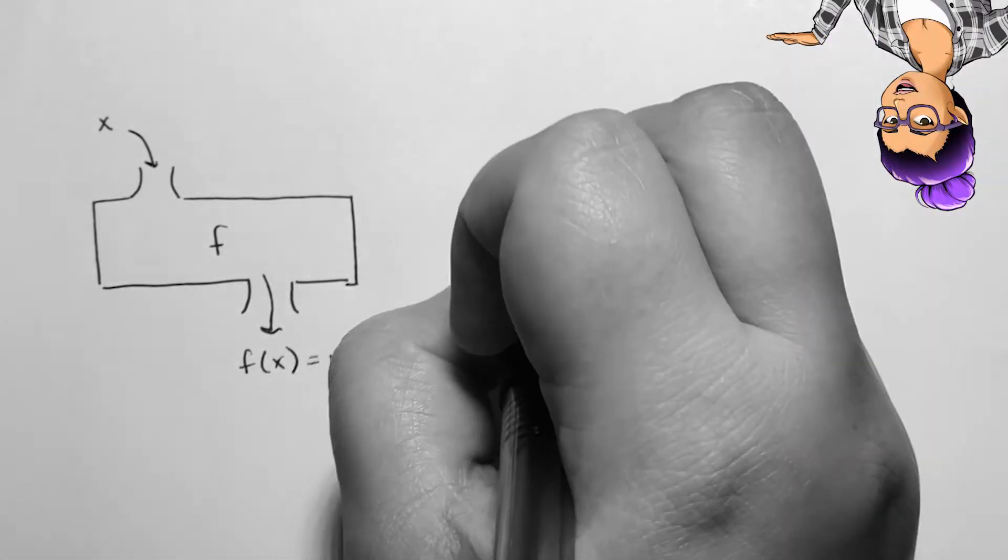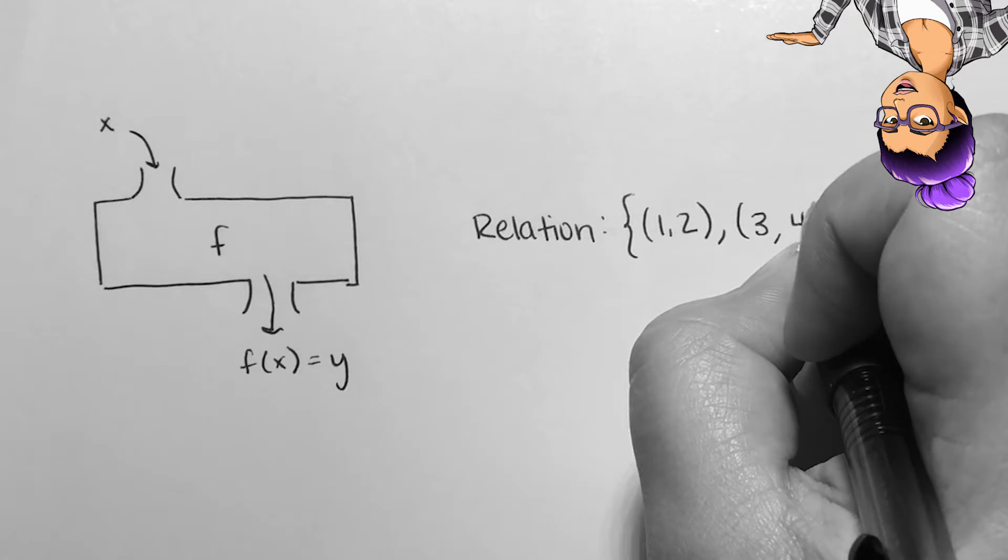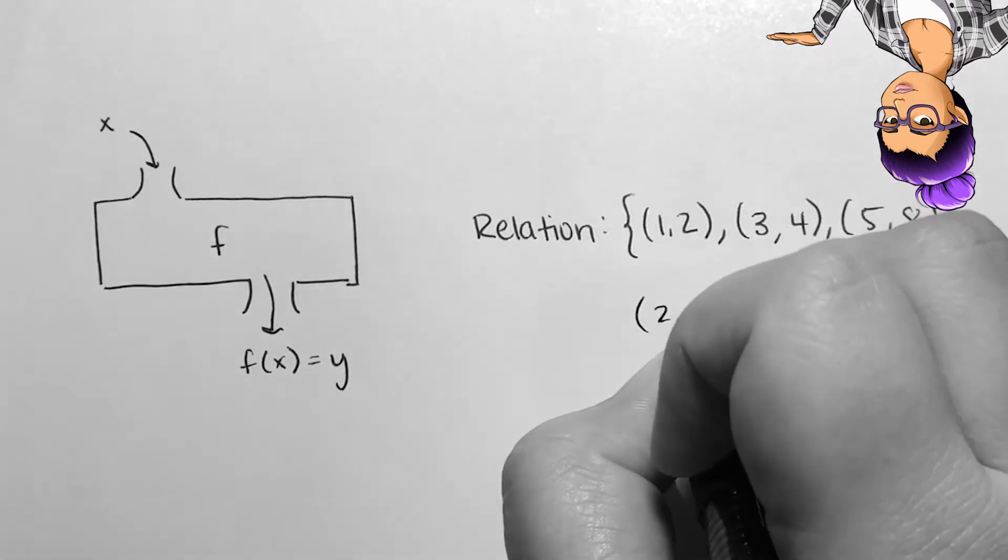If we have the relation 1, 2, 3, 4, 5, 8, 2, 6, and 4, 8, we can call it a function.